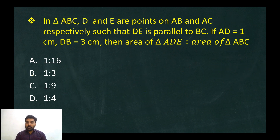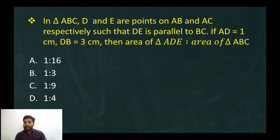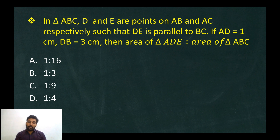In a triangle ABC, D and E are points on AB and AC respectively, such that DE is parallel to BC. If AD equals 1 cm and DB equals 3 cm, find the ratio of the area of triangle ADE to the area of triangle ABC.